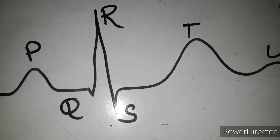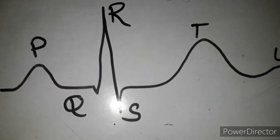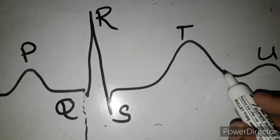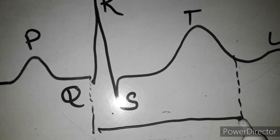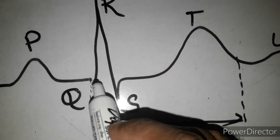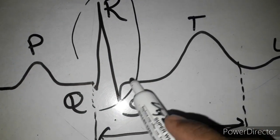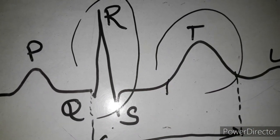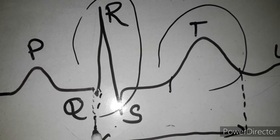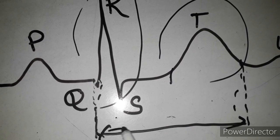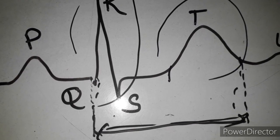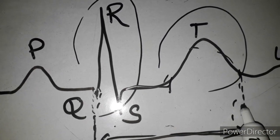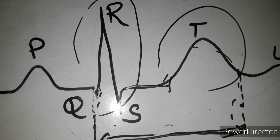We will talk about the QT interval. The QT interval includes the QRS complex and the T wave. This is the QT interval — this is the QRS complex and this is the T interval.